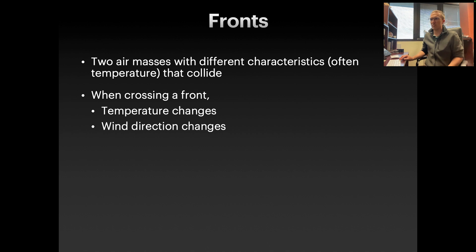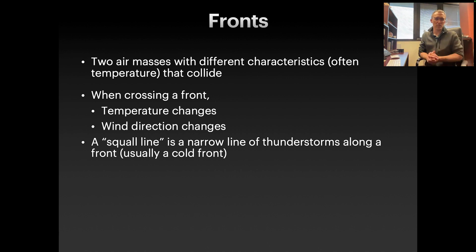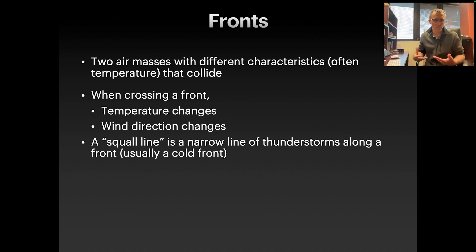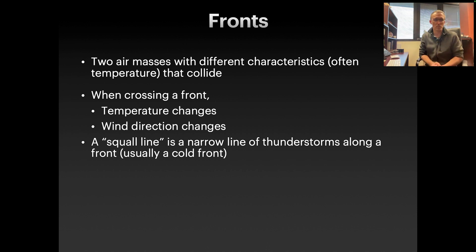Fronts are two air masses with different characteristics — typically temperature — that collide together, and this is often how you get the initial lifting action to start a thunderstorm. When crossing a front, the temperature and wind direction will change. This often results in a narrow line of thunderstorms along that front, where warm air is lifted over cold air in what is called a cold front.